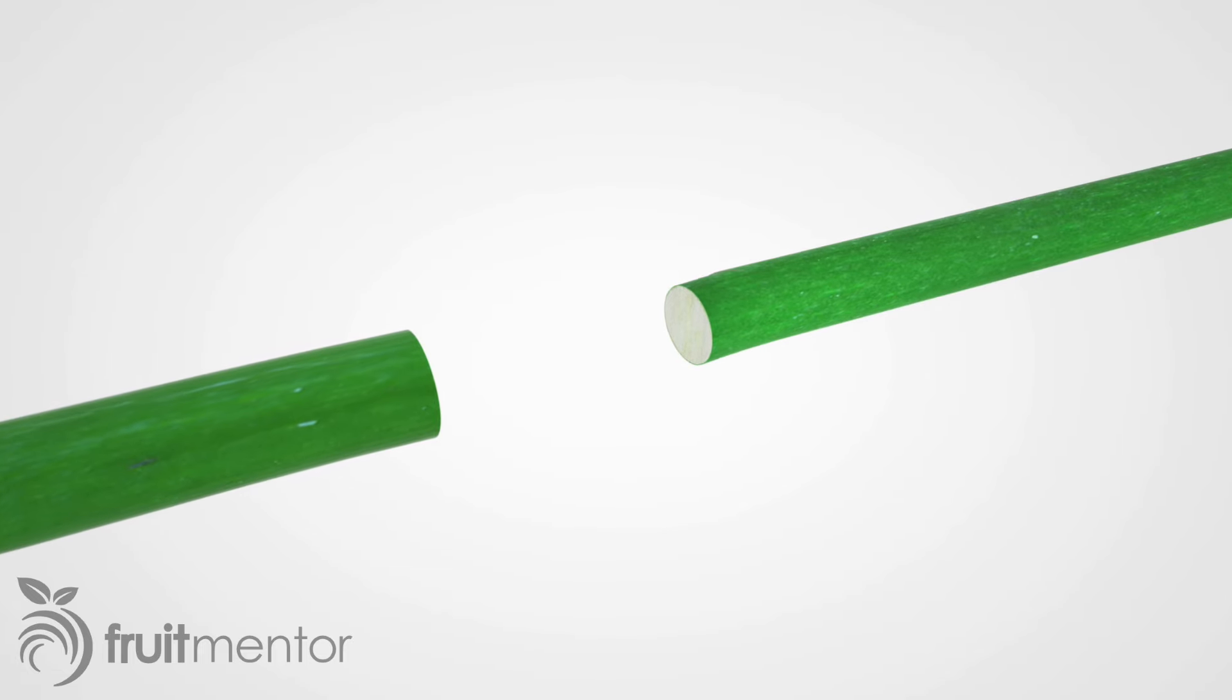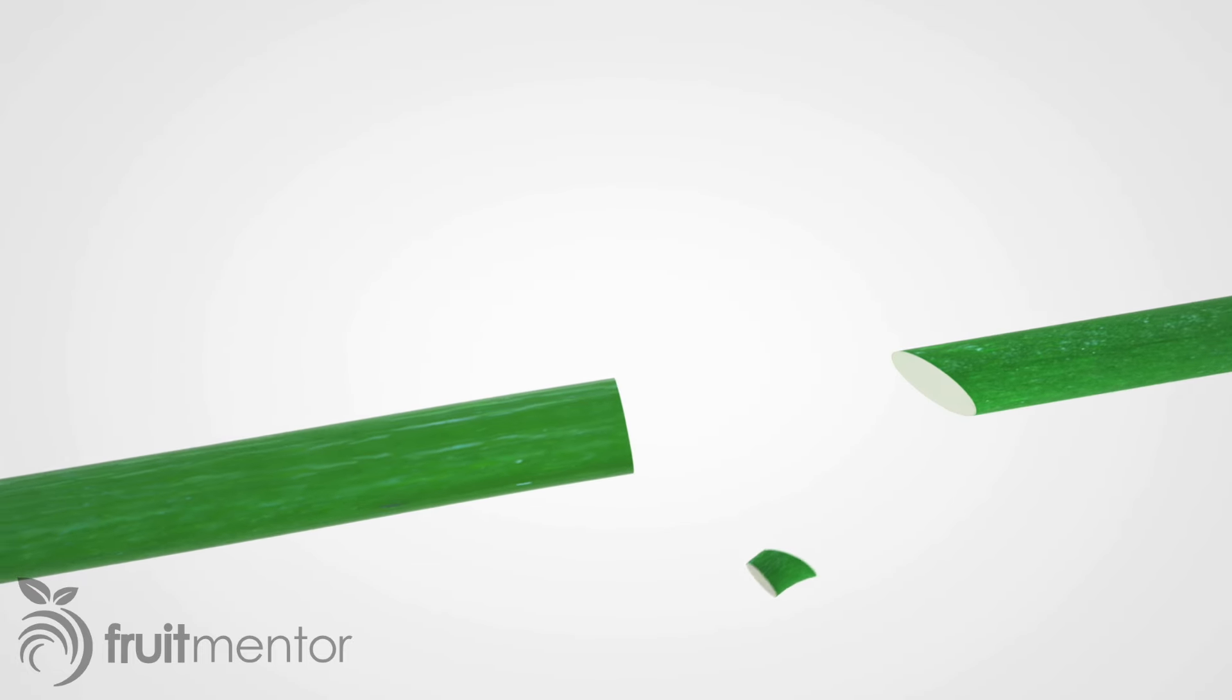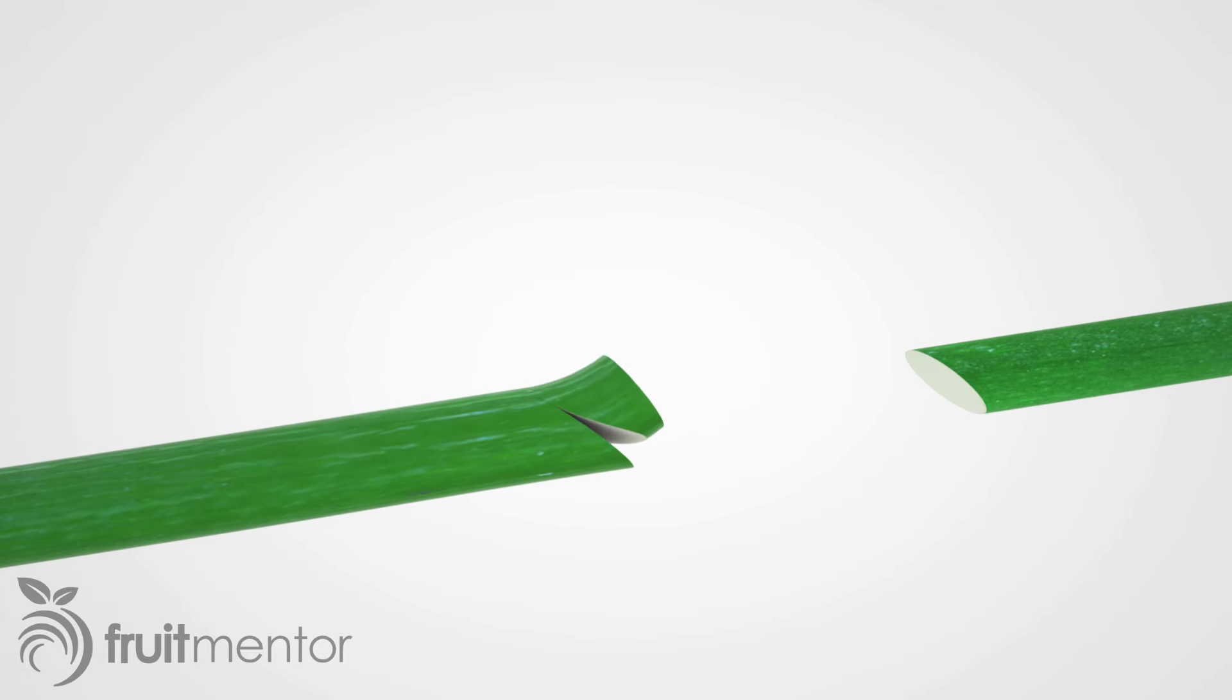For the Z-graft, I cut both the rootstock and the scion at about a 45 degree angle. Then at the longer ends I make another cut at a very slight angle. The next step is to cut a small strip with the width preferably smaller than the diameter of the smaller of the two pieces to be joined.